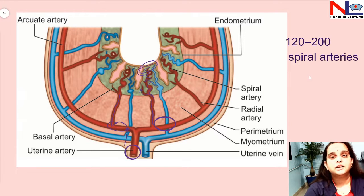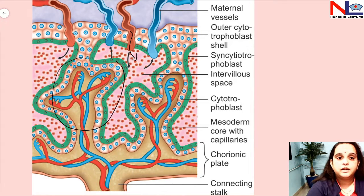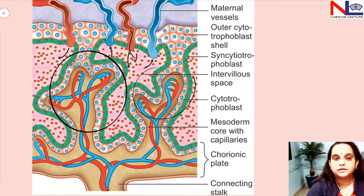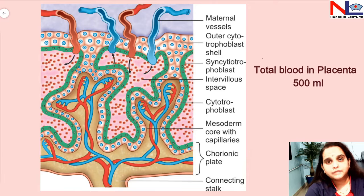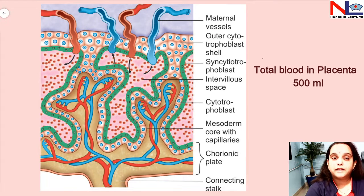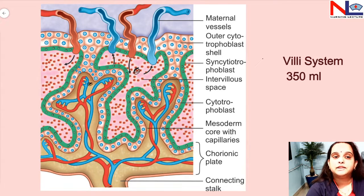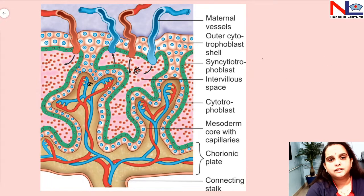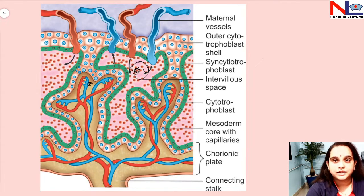These spiral arteries flow inside the intervillous space. There are finger-like projections in the placenta called chorionic villi, and the spaces between the villi are called the intervillous space. Blood comes through the spiral arteries into the intervillous space. In the placenta, there is about 500 ml of blood — 150 ml lying inside the intervillous space and 350 ml inside the villous system. Roughly 500 to 600 ml of blood per minute circulates around the intervillous space, meaning the blood is replaced about three to four times every minute.